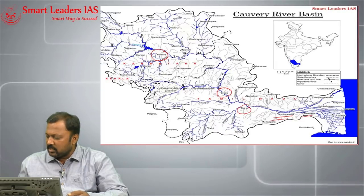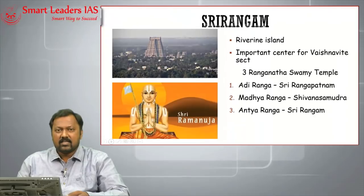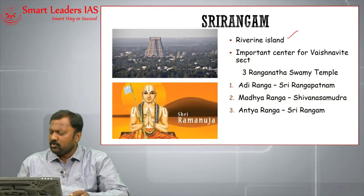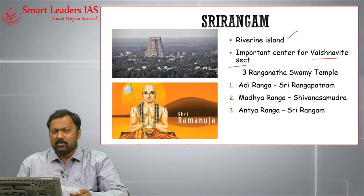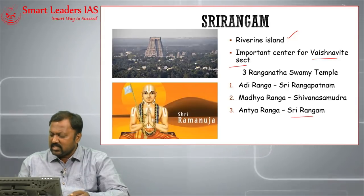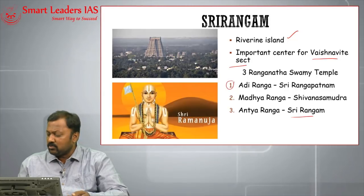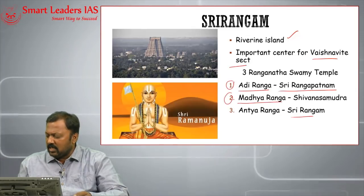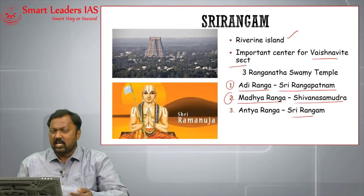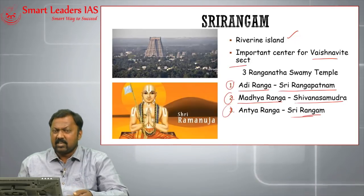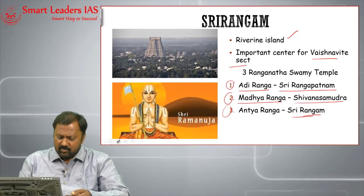Srirangam is a river island located near Tiruchi and is known for the Vaishnavite sect. It has an important temple called the Ranganatha Temple — the third in a series of temples on the banks of the Cauvery. The first is the Adhiranga temple in Srirangapatinam, the second is Madhiyaranga at Sivasamudra, and the third is Anthiranga at Srirangam.